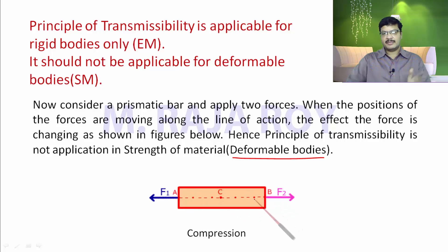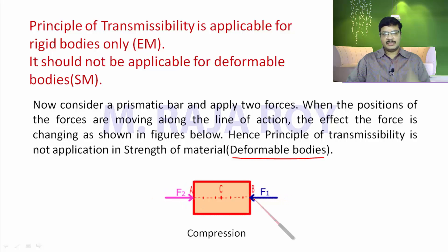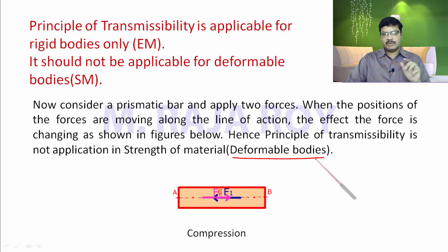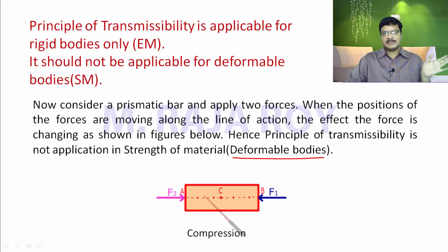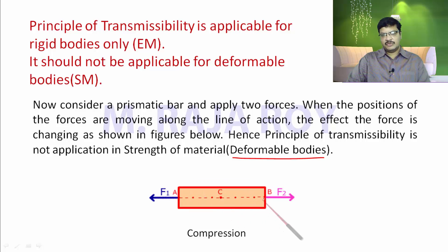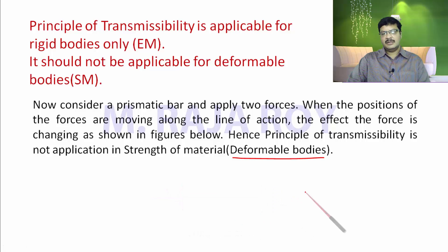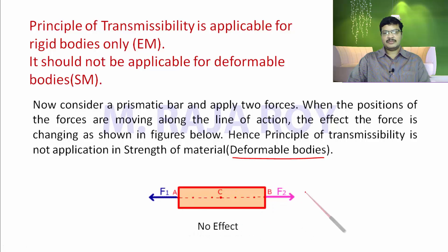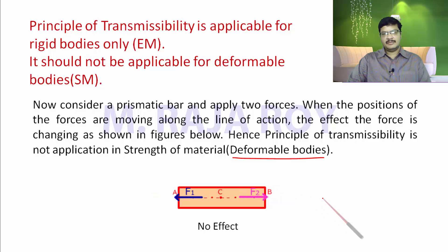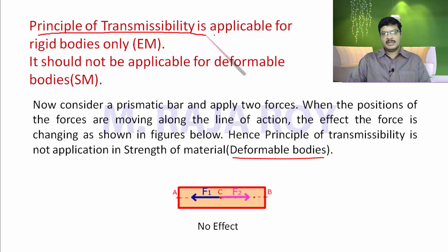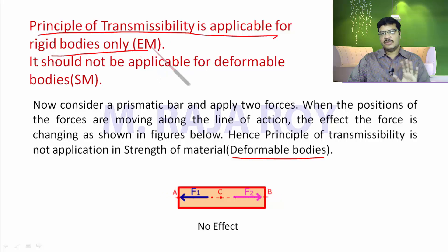If the body is not deforming, not compressing or elongating, then it is not a problem — that is the case of a rigid body. But if you consider a deformable body, the effect changes. Also, if you transfer both forces to point C, there is no effect since both forces act at the same point in opposite directions. That is why the principle of transmissibility is applicable only for rigid bodies in engineering mechanics. Do not apply this principle to strength of materials.